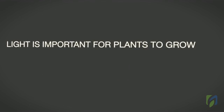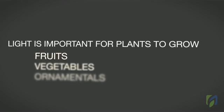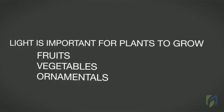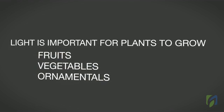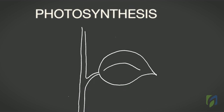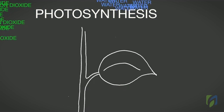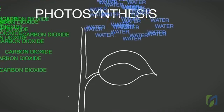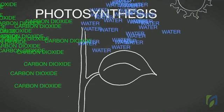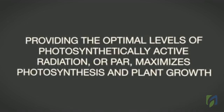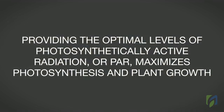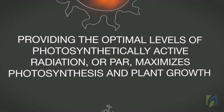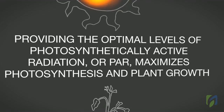Light is important for plants to grow, whether those plants be fruits, vegetables, or ornamentals. Light is one of the main drivers of plant growth. Plants use light in the chemical process of photosynthesis. During photosynthesis, plants convert carbon dioxide and water into carbohydrates and oxygen in the presence of light. Depending on the plant species, providing the optimal levels of photosynthetically active radiation, or PAR, maximizes photosynthesis and plant growth.